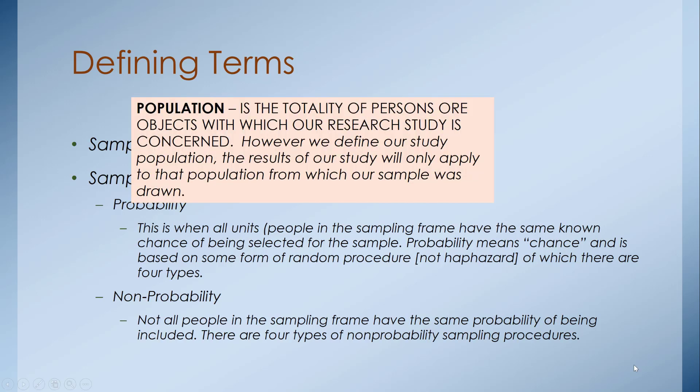The population is the totality of persons or objects with which our research study is concerned. However we define our study population, the results of our study will only apply to that population from which our sample was drawn. If we're talking about a community, it's the population of individuals with that characteristic who reside in that community — the total number of persons or objects our research study is concerned with.